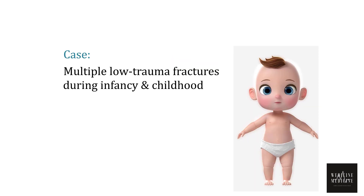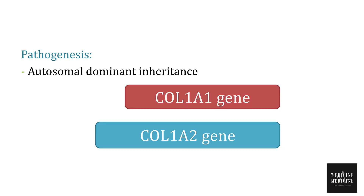Such conditions often present with multiple low-trauma fractures during infancy and childhood, along with other associated features. Osteogenesis imperfecta results from mutation in COL1A1 and COL1A2 genes, which encode for type 1 collagen, as a result of which tissues such as skin, sclera, teeth, and ligaments are affected.